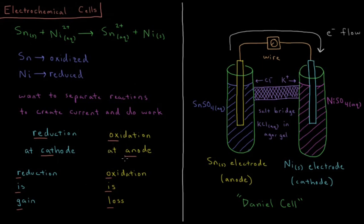So we have OIL RIG, anox and red cat are the mnemonics which we use to remember what oxidation and reduction are, which one occurs at the cathode and anode. And then we have these cells where we draw our anode on the left, cathode on the right, to represent the net electrochemical reaction which is occurring due to the flow of electrons between these two ions.